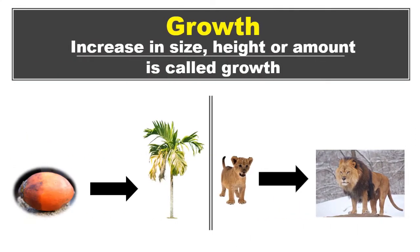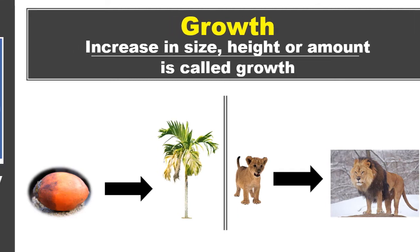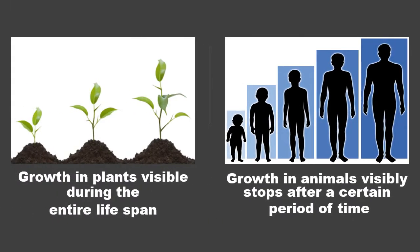Growth. An increase in size, height, or amount is called growth. Growth in plants is visible during the entire lifespan, whereas growth in animals visibly stops after a certain period of time.